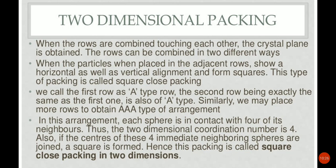In square close-packing, each sphere is in contact with four of its neighbors, so the two-dimensional coordination number is 4. If you join the centers of the four immediate neighboring spheres, you get a square. This two-dimensional close-packing is therefore called square close-packing.